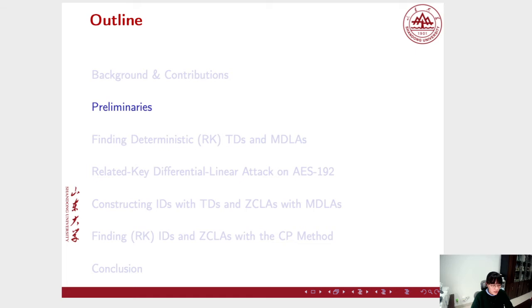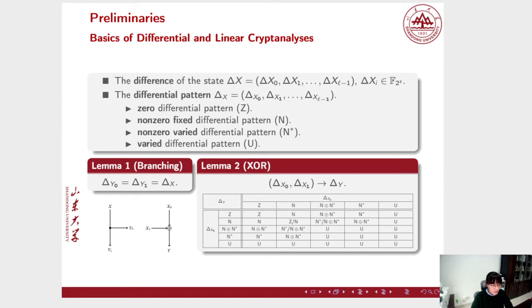Before we detail our work, we briefly recall some necessary preliminaries. A differential that predicts only parts of an n-bit difference is called a truncated differential. Instead of considering the accurate difference of the internal state, truncated differential pays attention to the differential pattern. The differential pattern is an L-dimensional vector with each Δxi being the linear combination of the four patterns of differences. If the difference equals zero, its corresponding differential pattern is zero differential pattern Z. If the difference is non-zero and fixed, the pattern is non-zero fixed differential pattern N. If the difference can be any value except zero, the pattern is non-zero varied differential pattern N*. If the difference can take any value, the pattern is varied differential pattern U.